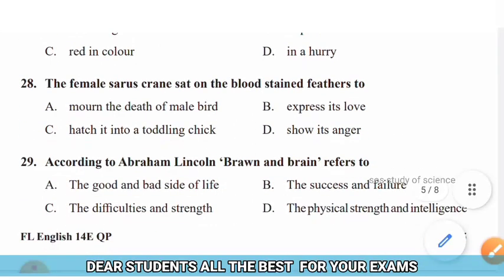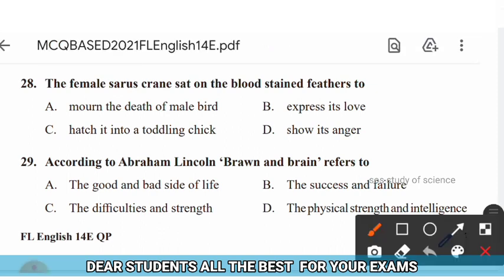Question 28: The female sarus crane sat on the blood-stained feathers to — options: (A) mourn the death of the male bird, (B) express its love, (C) hatch it into a toddling chick, (D) show its anger. The right answer is option C — hatch it into a toddling chick.